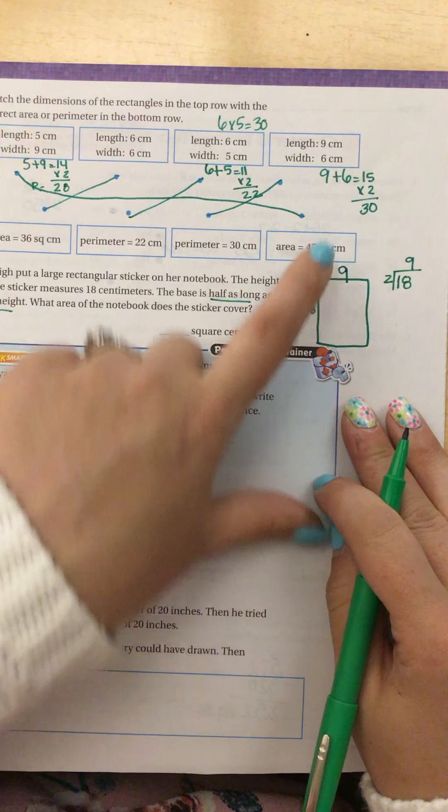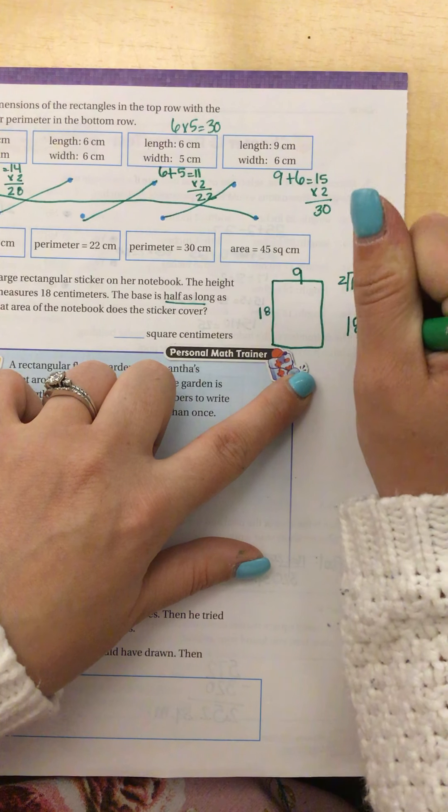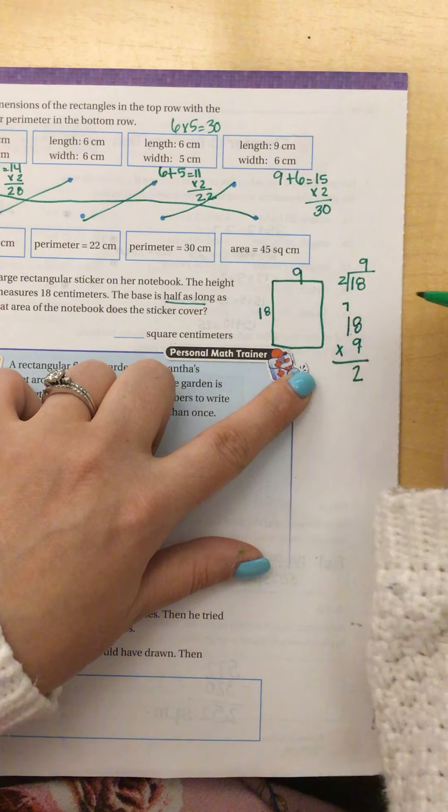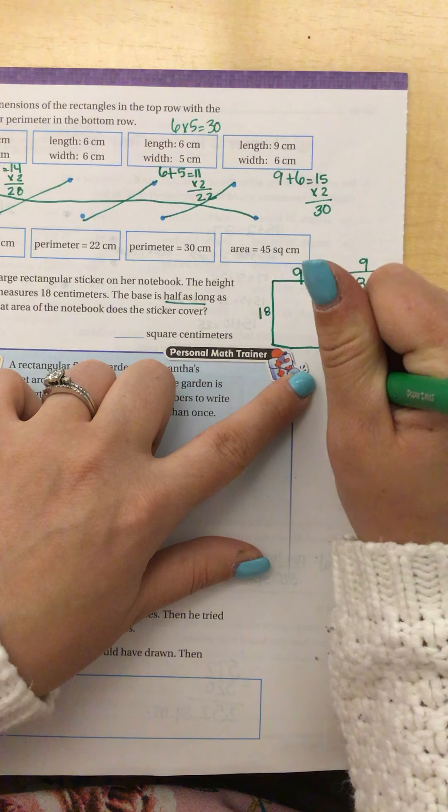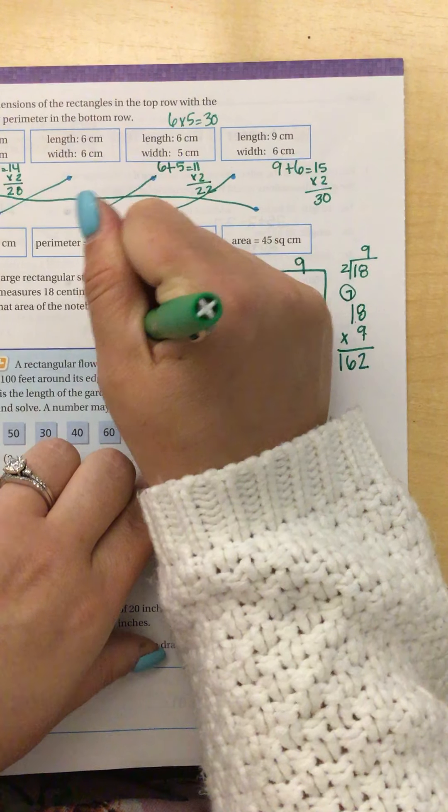Now it says, what is the area? Well, now I know my second dimension. So I can do 18 times 9. 9 times 8 is 72, 9 times 1 is 9, plus 7 is 16. So that means we have an area of 162 square centimeters.